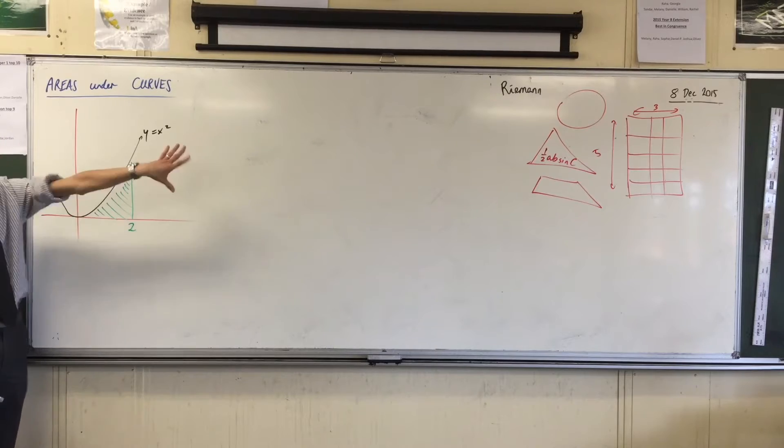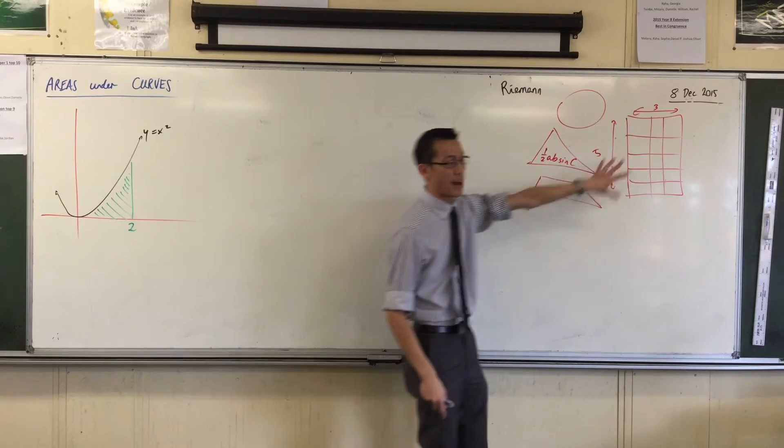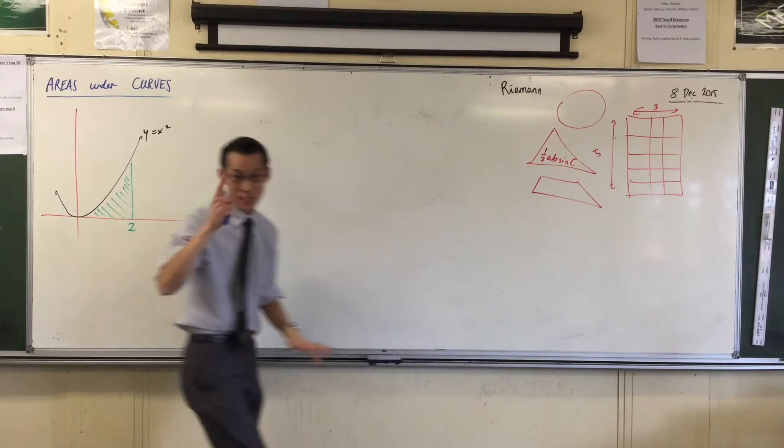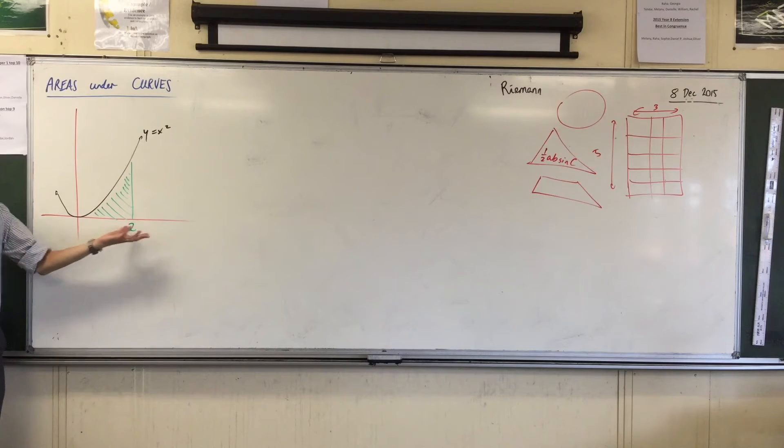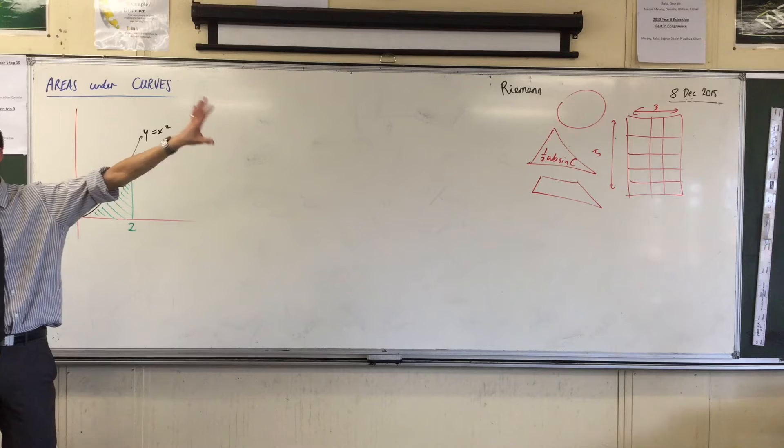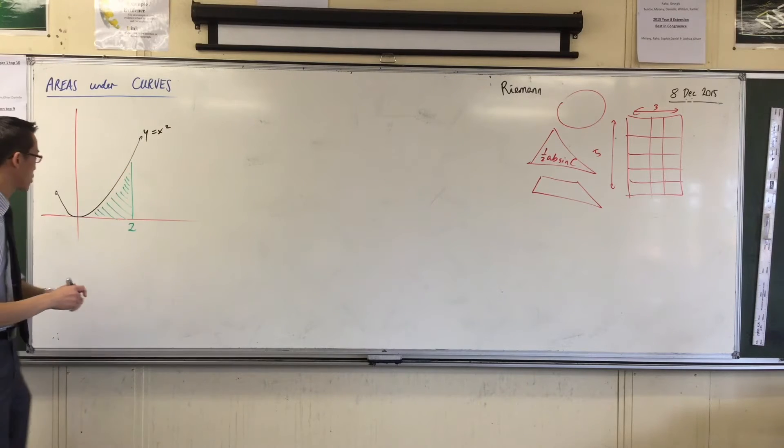So for instance, you've got all these shapes over here that we know how to work out the area. Riemann was really smart. He said, well, you know what? I can try and approximate this area with versions of those. So here was the first way he did it.